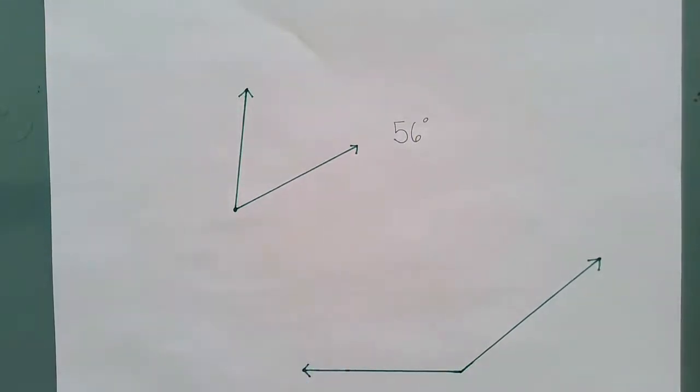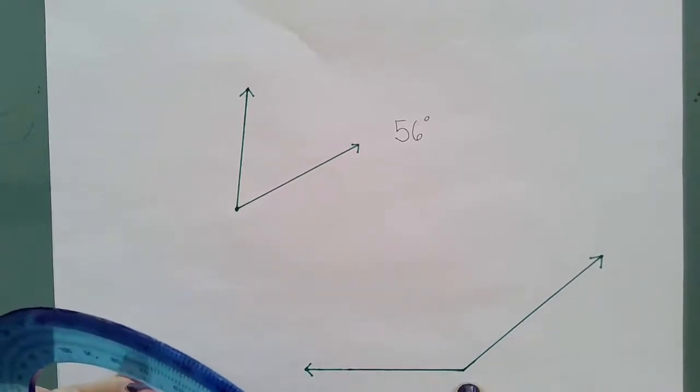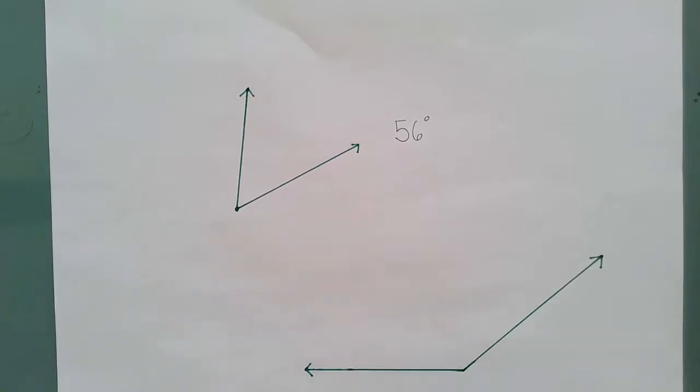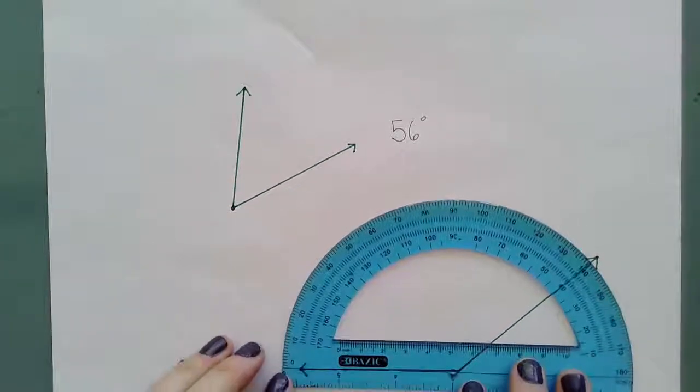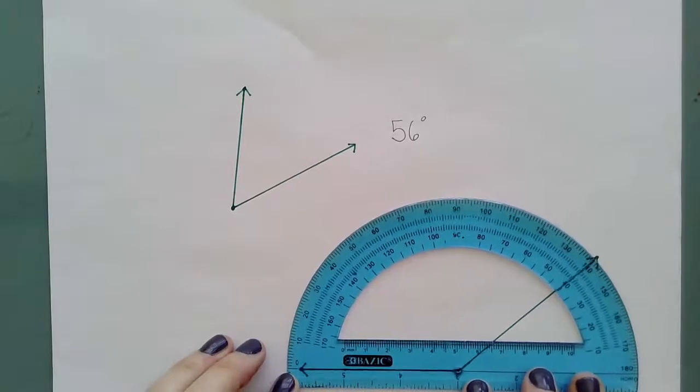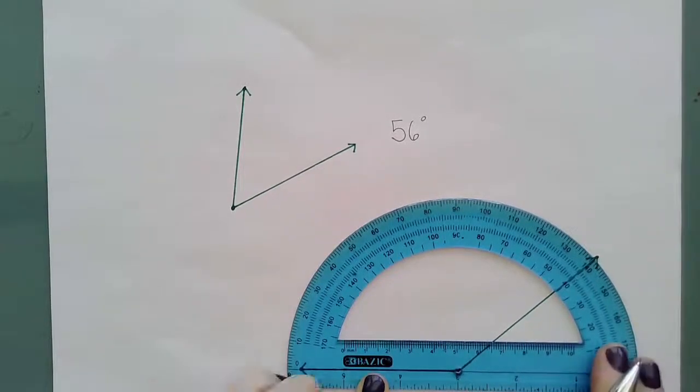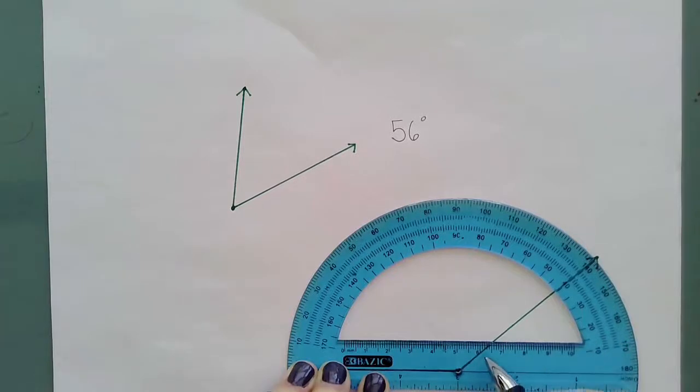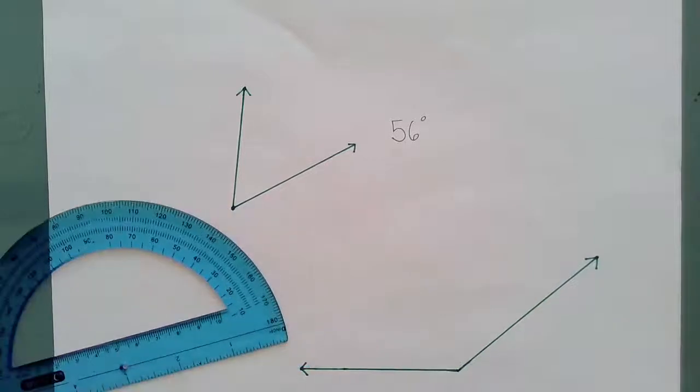Let's try our second angle here. And this one I know is an obtuse angle. So I know I'm going to be looking for that number on the outer edge here that is greater than 90 degrees. So again, I could start by lining up my zero edge by either ray, but I'm going to start here on the left and line it up with my zero edge. And then my center mark, I'm going to line it up with the vertex. And then I look over here and it looks like it's right at 140. So this angle is 140 degrees.